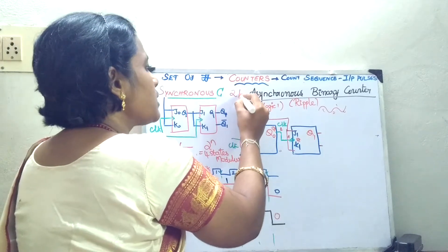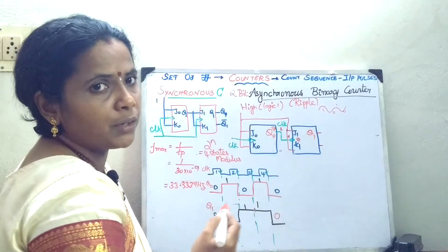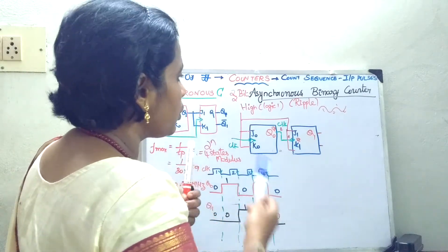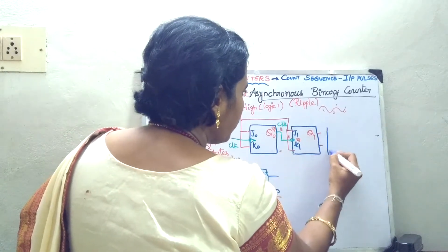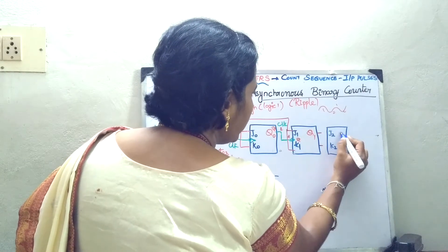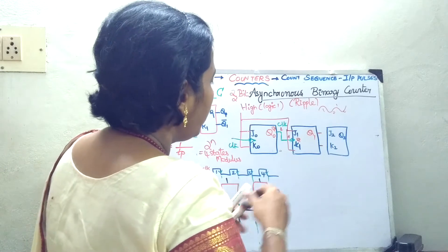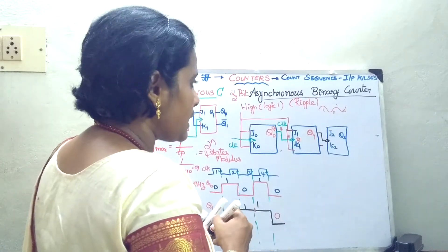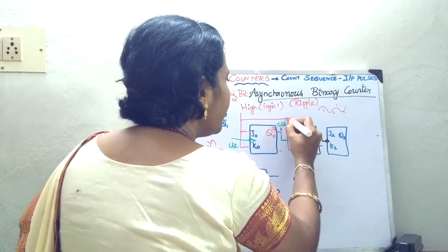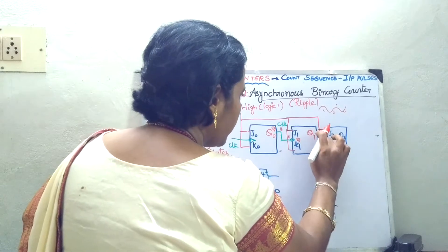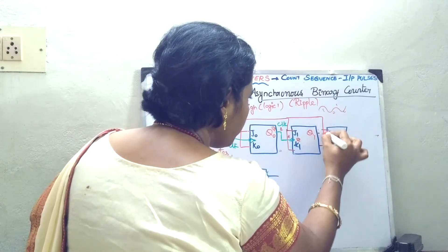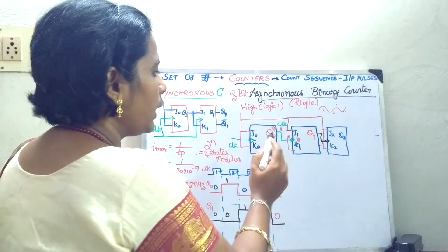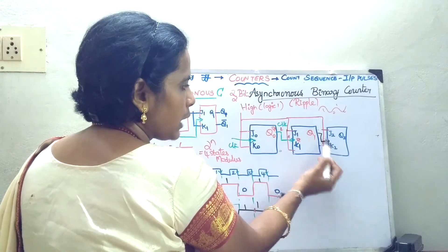Now the same counter I am going to extend for the 3-bit and 4-bit. To extend it to 3-bit, add one more flip-flop circuitry — J2, K2, and Q2. The clock of the first one should be given as the clock for the second one, and the output of the previous flip-flop is fed as a clock for the next flip-flop, and you give a logic high.